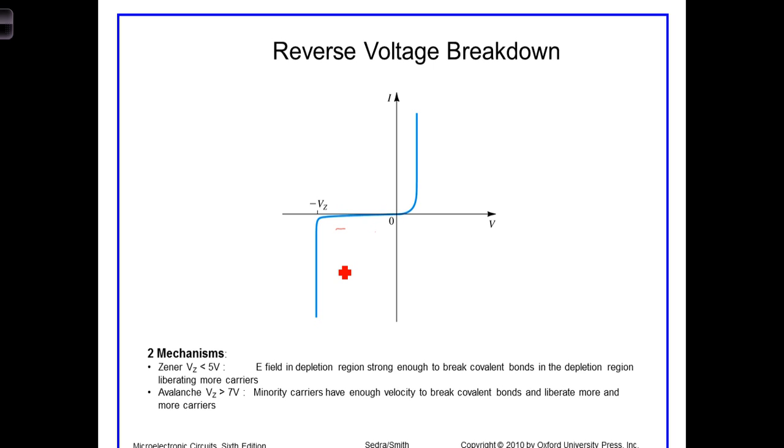Zener breakdown results when the reverse voltage is great enough to cause covalent bonds in the depletion region to break. Those breaking bonds liberate electrons and holes, which then flow under the influence of the junction voltage. When this occurs, there's very little further change in the diode voltage. At this point, the current ends up being limited by the circuit around it. Generally, Zener breakdown happens at reverse voltages less than about 5 volts.